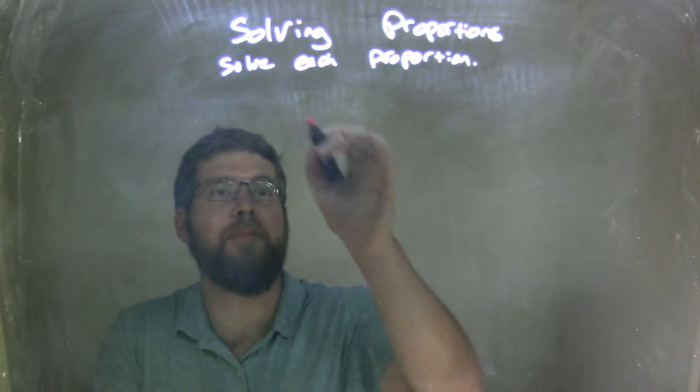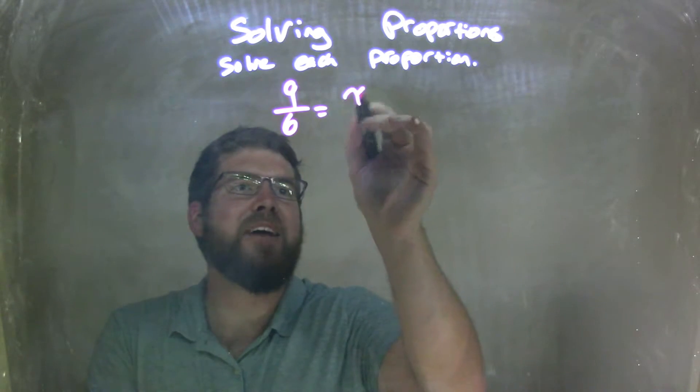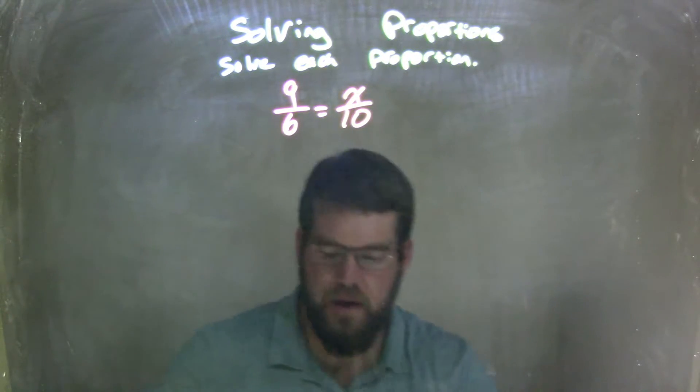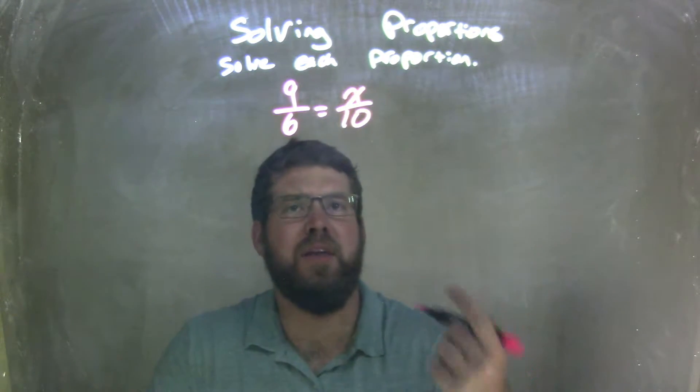So if I was given this proportion here, 9 over 6 equals x over 10. 9 over 6 equals x over 10. Well, I need to cross-multiply that, right?